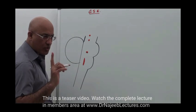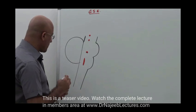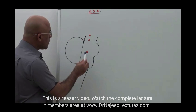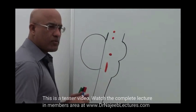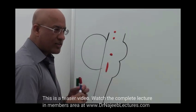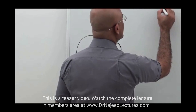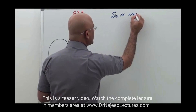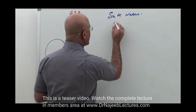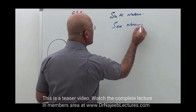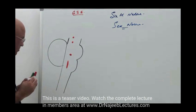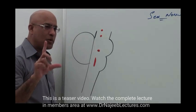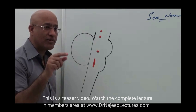The sixth cranial nerve innervates the lateral rectus. Now, if you really want to understand its exact position in the lower pontine area — the sixth nerve has a very intimate relationship. The sixth nerve nucleus has a very intimate, close, and emotional relationship with the seventh nerve system.